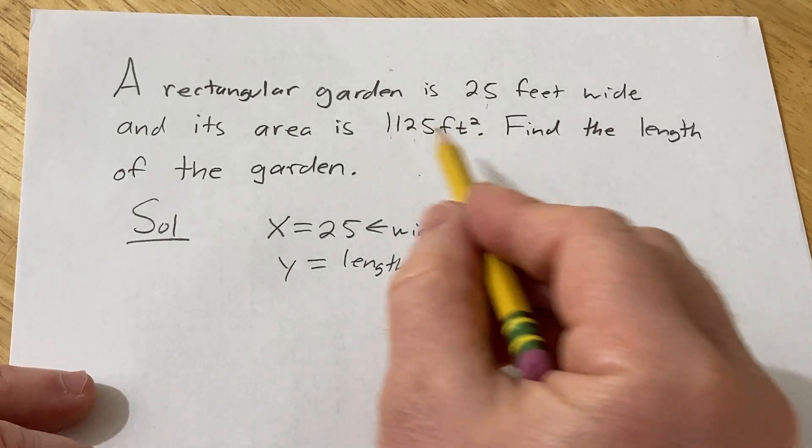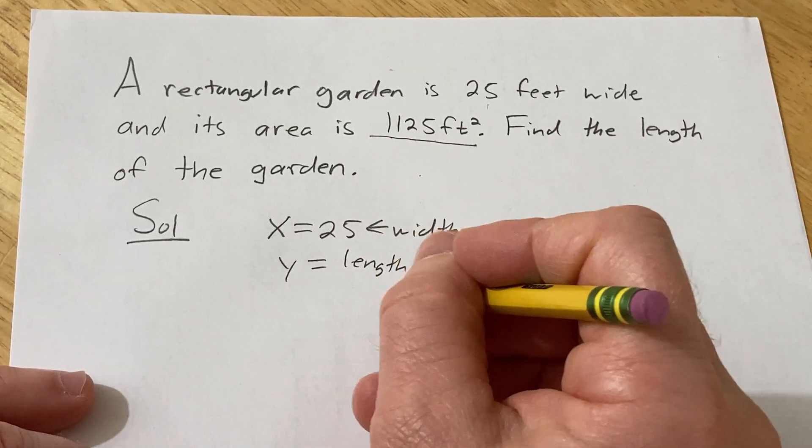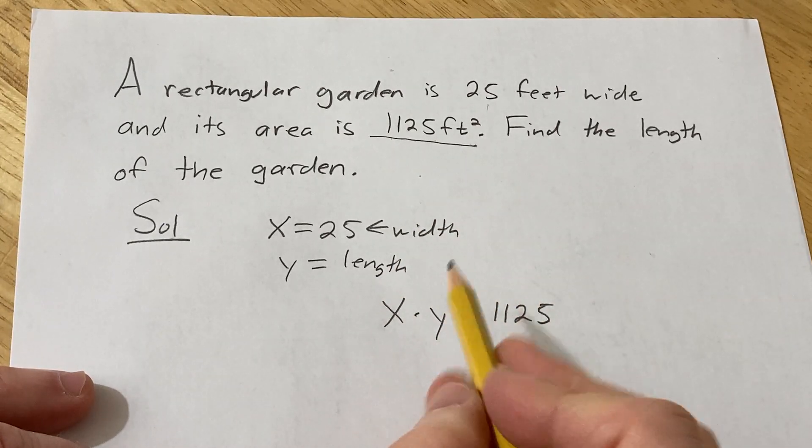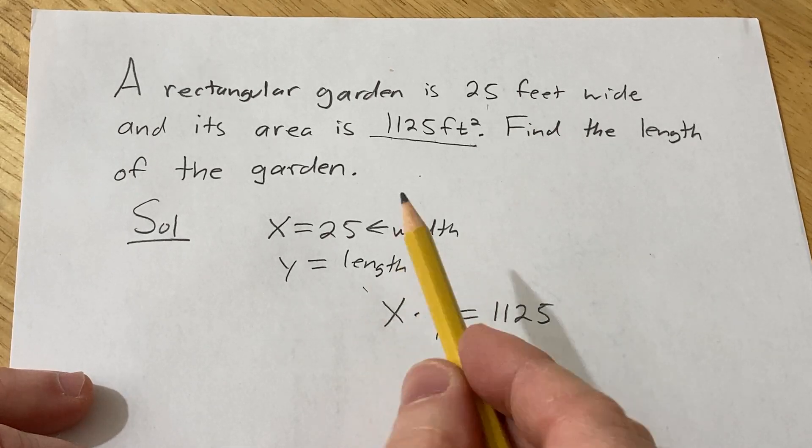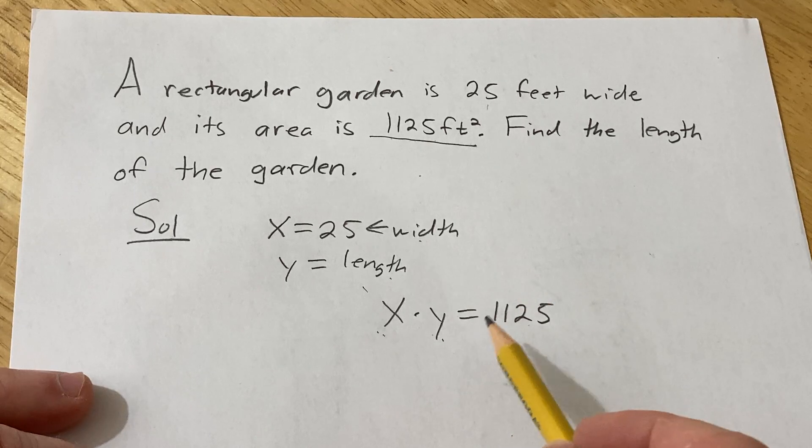So we're told that the area is 1,125 feet squared. So that means that x times y is equal to 1,125. Because the area is equal to width times length, and x is the width and y is the length, so when you multiply them you should get the area.